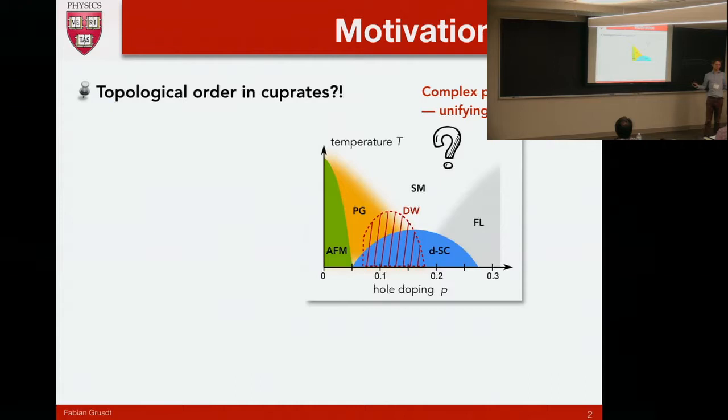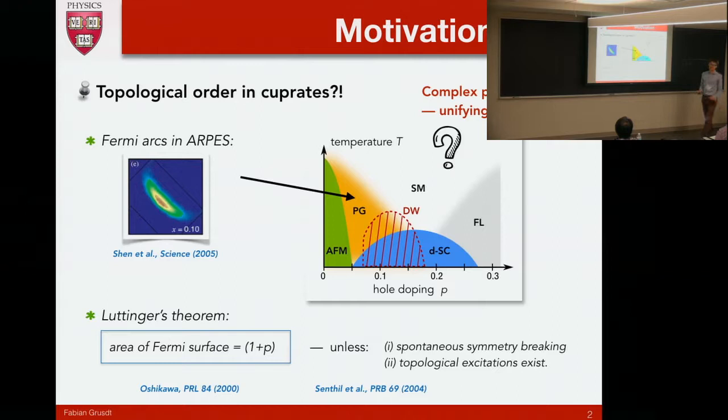The motivation in the end is to explore the phase diagram of the Fermi-Hubbard model. One question that Matthias discussed is, is there any topological order? The motivation was that these Fermi arcs may be the signature of some topological order, in particular for this low-doping pseudo-gap regime.